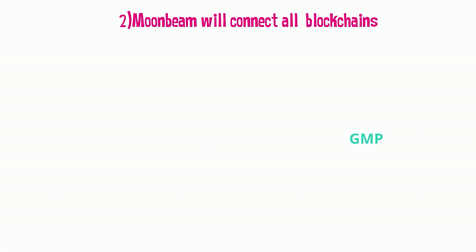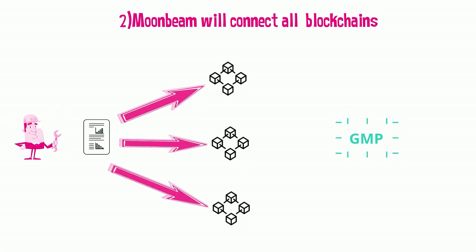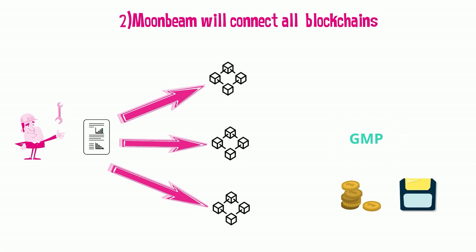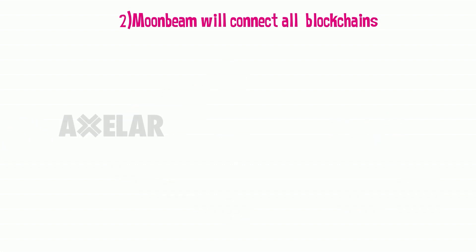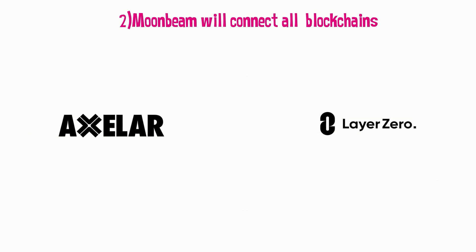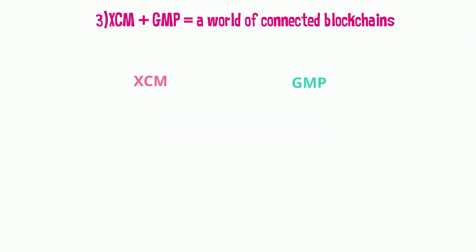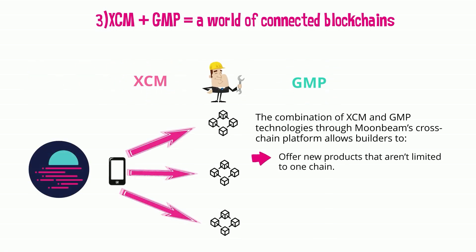GMP is the term used to describe the latest evolution in cross-chain interoperability. GMP allows developers to connect smart contracts on different chains together to move not only tokens but any type of data, which will drive the efficiency and usability of Web3 applications. GMP solutions allow smart contracts on different chains to connect and interoperate in ways that previously were not possible. To reach that goal, Moonbeam has been working with several companies such as Axelar and LayerZero. Consequently, builders on Moonbeam can design smart contracts that will have access to all the functionality of remote blockchains.